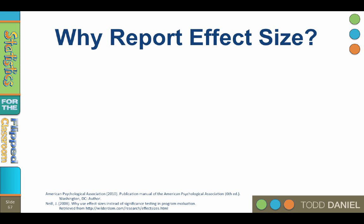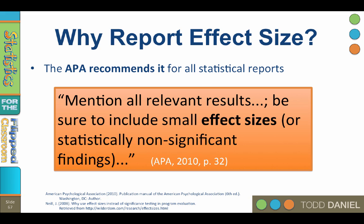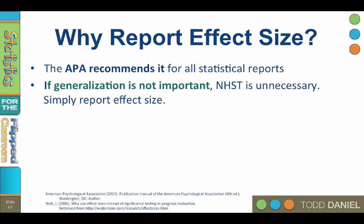So why should we report effect size? Several reasons. First, the APA recommends it — the APA recommends that all published statistical reports include a measure of effect size, even for statistically non-significant findings. Additionally, in a previous example about padding for hip replacement patients that reduced the incidence of bed sores to zero, statistics were not necessary to interpret the result. So in cases where you're not trying to generalize from a sample to a population, null hypothesis statistical testing is unnecessary. If the research is exploratory or focused on your particular project, don't bother with p-values — just report the effect size.